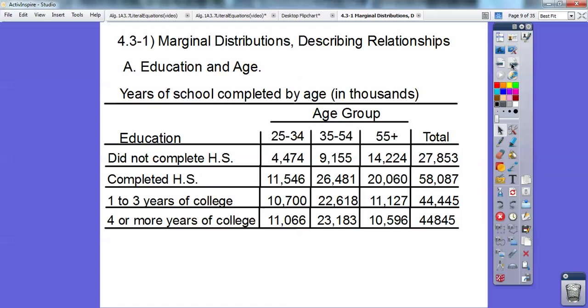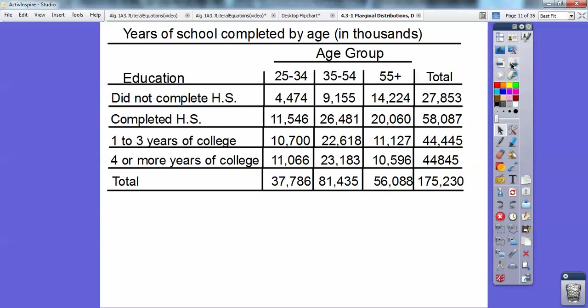And then completed high school, and then all the age groups right there, one to three years of college, and then four or more years of college. And notice that right column over there is all the totals right there. So I'm going to put the totals down the bottom row down there also.